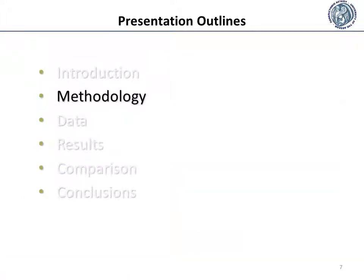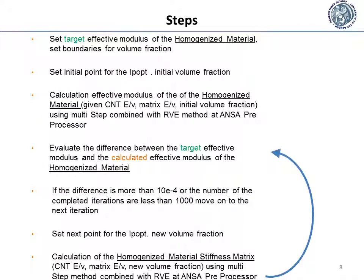Turning our attention now to the methodology. The steps to be followed for the optimum volume fraction identification using the present method are: First, the target effective modulus of the homogenized material and the boundaries for the volume fraction need to be set. Afterwards, an initial point for the IP-Opt algorithm needs to be chosen — the initial point is the initial value of the carbon nanotube volume fraction. Then, given the carbon nanotube and matrix modulus and Poisson ratio and the initial volume fraction, the effective modulus of the homogenized material is calculated.